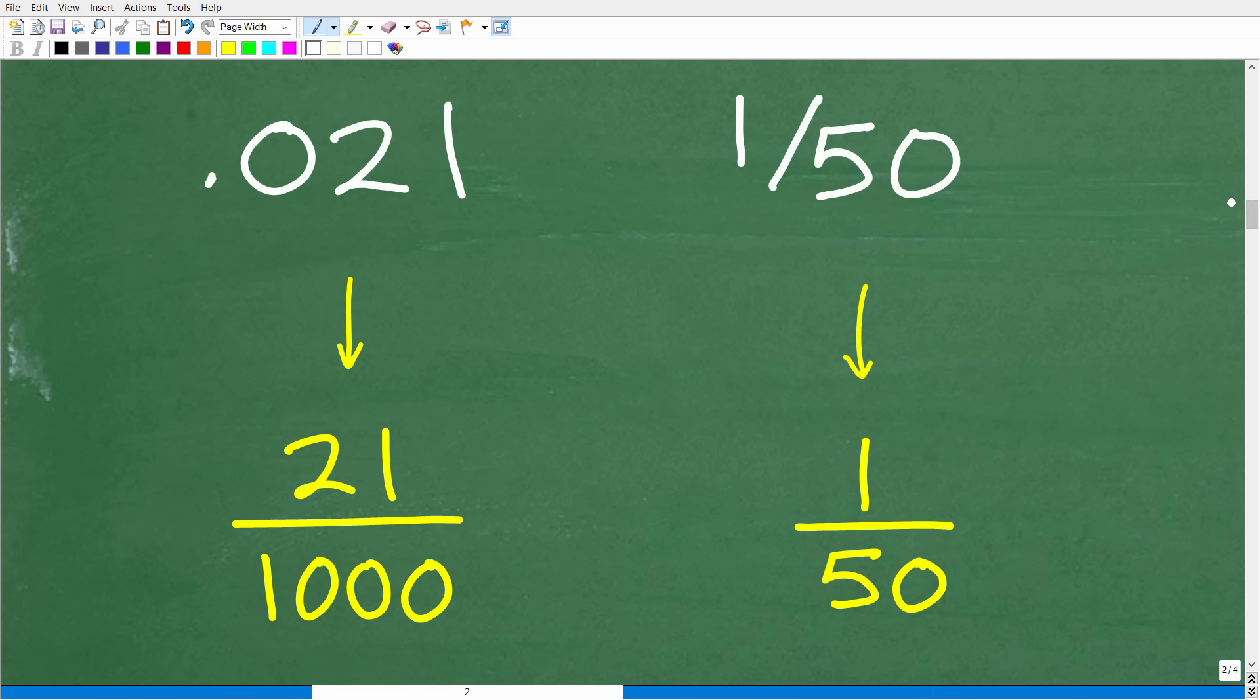So 0.021. Now, the 0 right here is in what place? This is the tenths place. This is the hundredths place. So this is the thousandths place. So this is 21 thousandths. So hopefully everyone understands that. And if we don't, well, you may need to review place value. So now, instead of looking at a decimal and a fraction, we are going to compare 21 over 1,000 to 1 over 50.